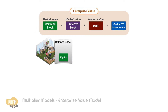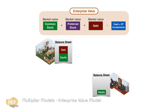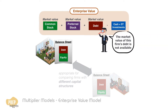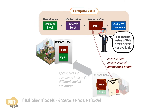Since enterprise value takes into account both equity and debt of the company, it's an appropriate measure when comparing firms that have significantly different capital structures. However, one potential problem when calculating enterprise value is that the market value of a firm's debt is often not available. This can be the case where the bonds are privately issued or are not actively traded. In such cases, the analyst can use the market values of similar bonds or can use their book values.